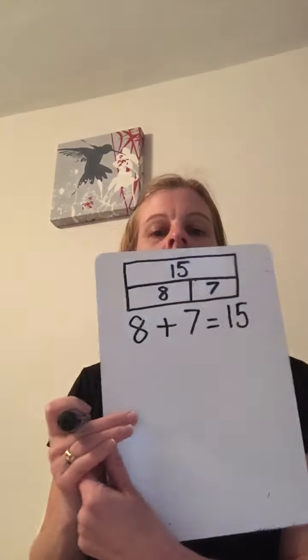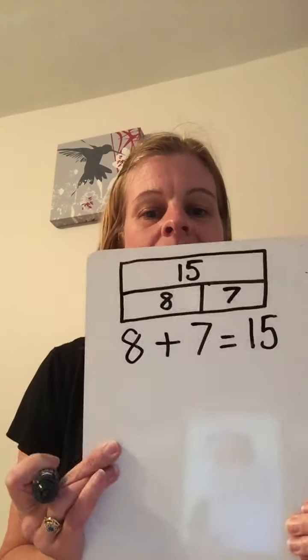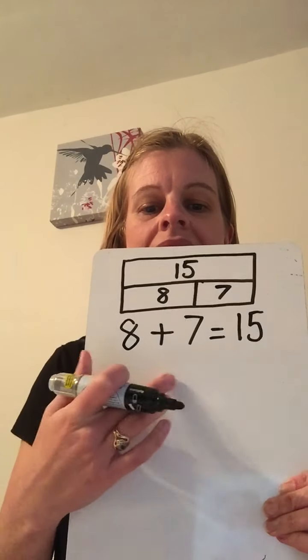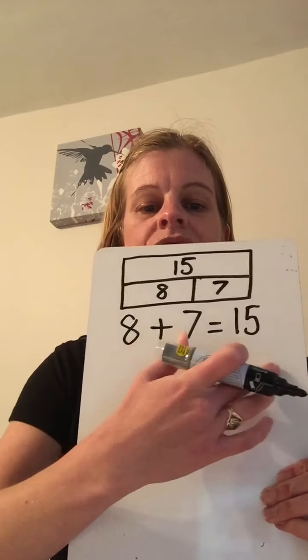So I've got 8, add 7. I'm going to start on 8 and add 7. 1, 2, 3, 4, 5, 6, 7 — equals 15. So you can always double check my answers. There's my first one: 8 add 7 equals 15.